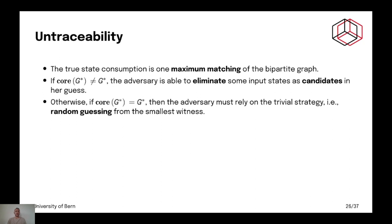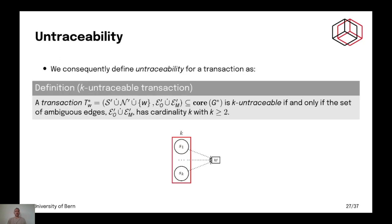Meaning random guessing from the smallest witness. And so, take the smallest witness. Well, you have this witness. You have a transaction. And you take this witness. And you count how many states are linked with ambiguous edges. And this actually gives us the definition of K untraceable transaction.